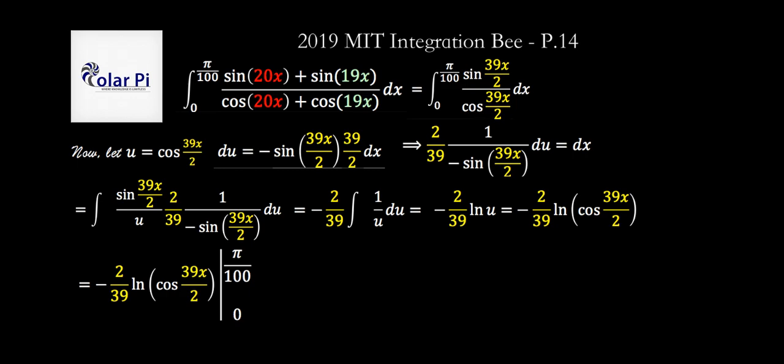And we know how to proceed from here, right? We plug in pi over 100 and then we plug in zero and take the difference. And because we plug in zero and take the difference, we're gonna get a plus right here. And that's because this here came with a minus in front of it, so when we do minus minus, it's gonna turn into plus.